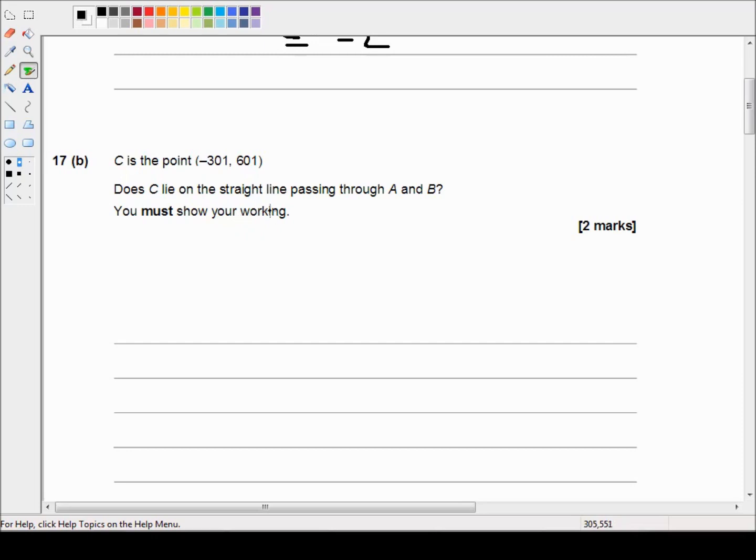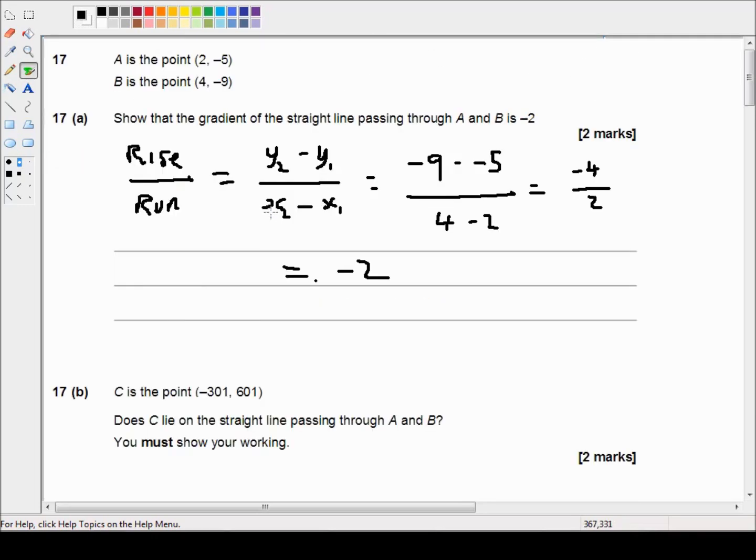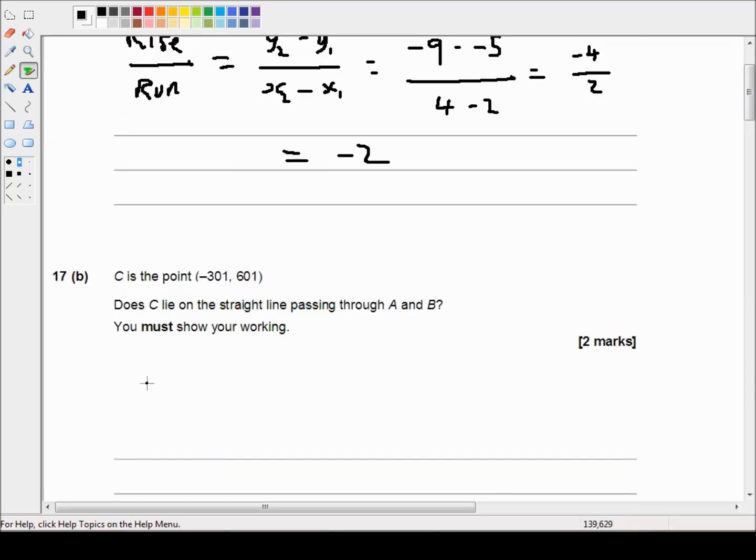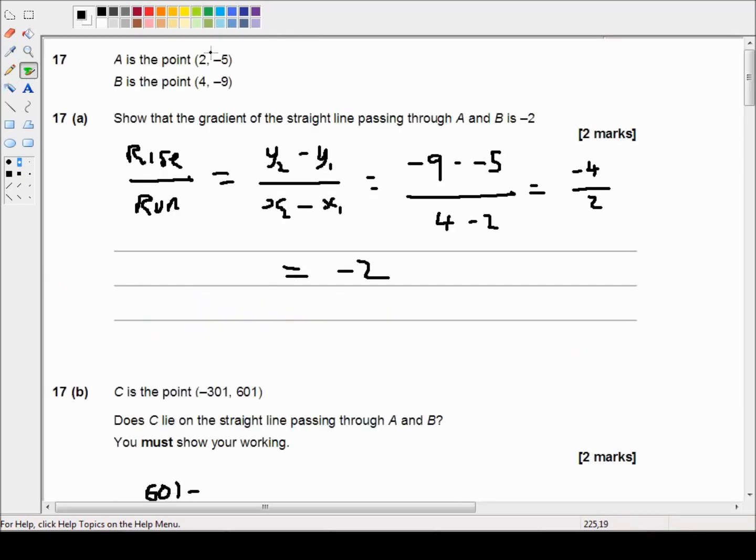One way would be to work out the gradient of a line where C is another point on this line, and if the gradient is the same and this point and one of these two points is on the same line, then C must be on the same line.